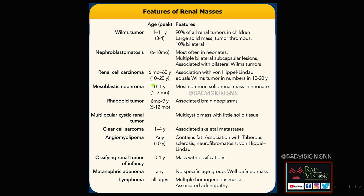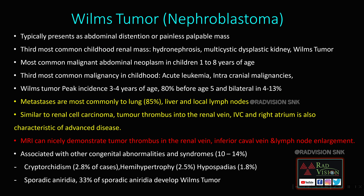Renal cell carcinoma is very rare in younger age groups. Rhabdoid tumor is associated with an atypical rhabdoid teratoid tumor in the brain, typically in the posterior fossa. Clear cell sarcoma is associated with skeletal metastasis. Ossifying renal tumor of infancy presents as an ossifying mass extending into the renal pelvis, sometimes forming a staghorn calculus.